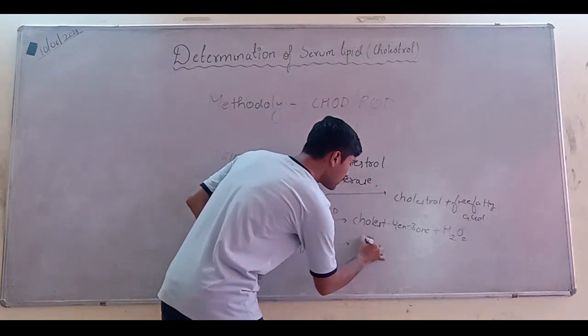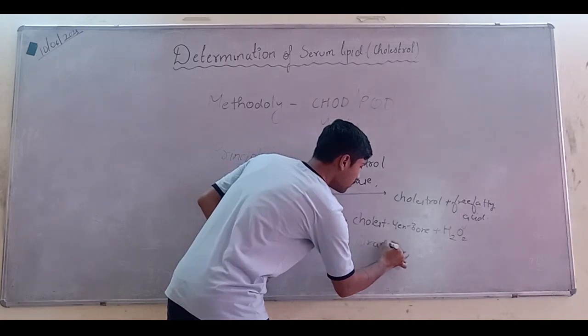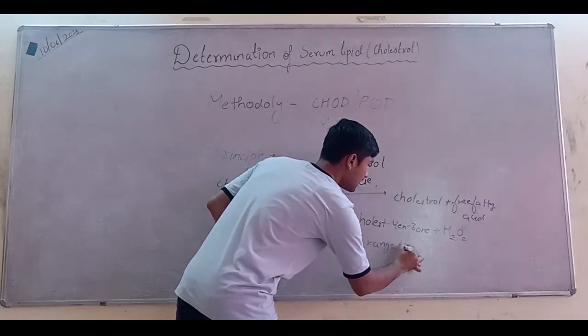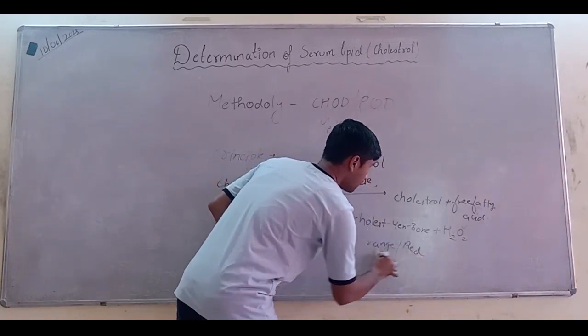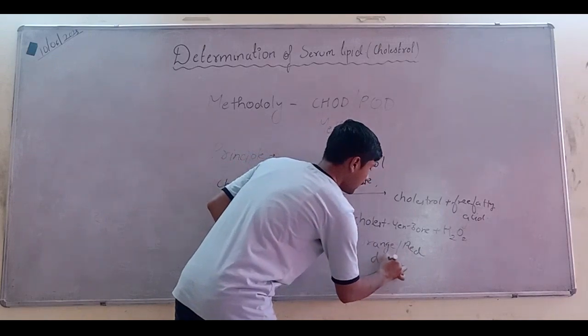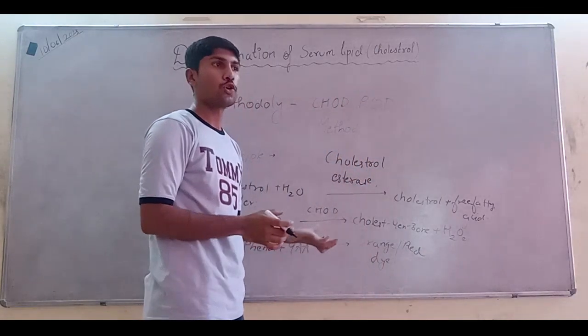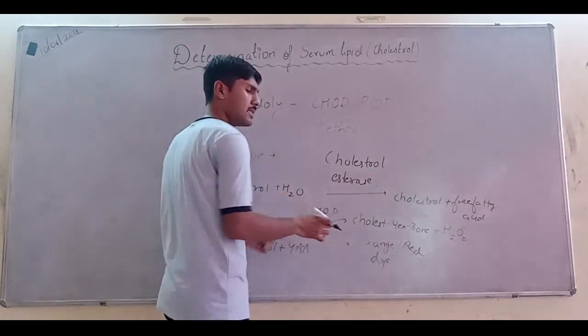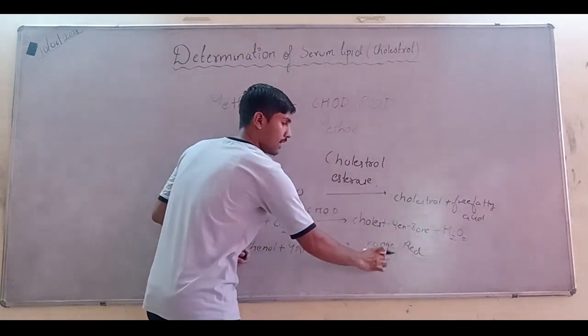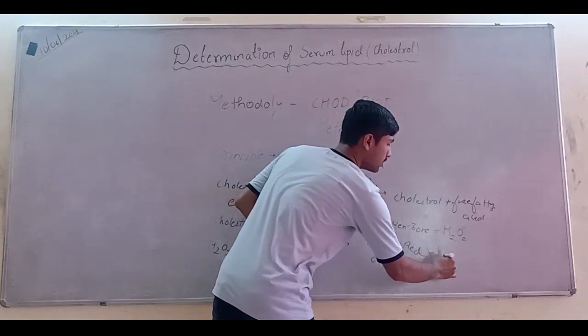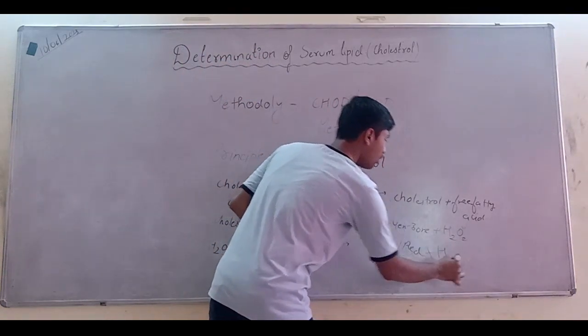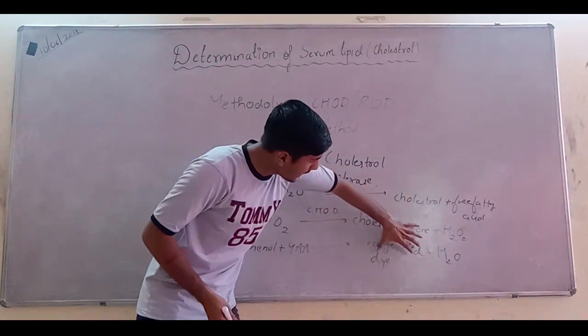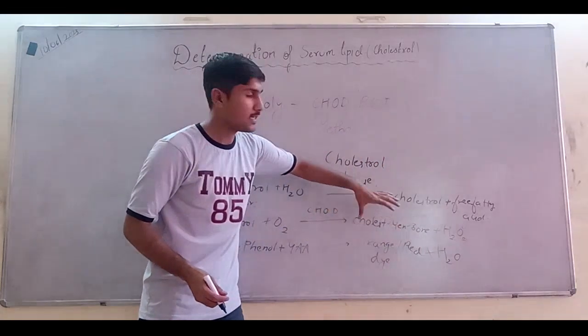Aminoantipyrine. This forms a red or orange dye. Orange and red dye. This has a specific name known as quinoneimine. Quinoneimine. It appears that it has a red or orange color. So according to the intensity of that color, that dye produced, we will tell how much concentration of cholesterol is present in our blood.